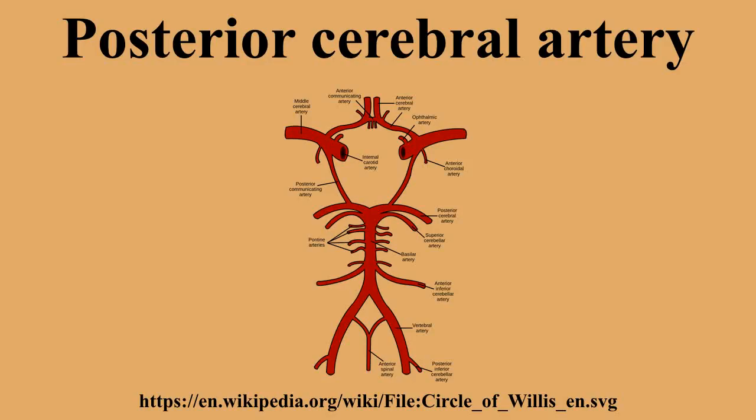The branches of the posterior cerebral artery are divided into two sets: ganglionic and cortical. Central branches, also known as the perforating branches, include the thalamoperforating and thalamogeniculate — posterior medial ganglionic branches. These are a group of small arteries which arise at the commencement of the posterior cerebral artery. Together with similar branches from the posterior communicating artery, they supply the posterior perforated substance, and the medial surfaces of the thalami and the walls of the third ventricle.